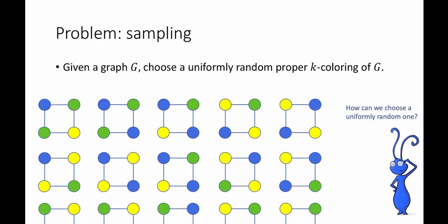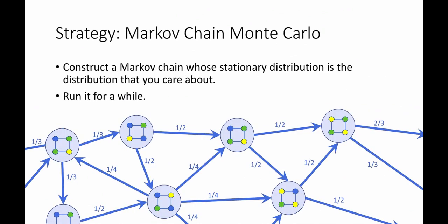Hopefully this example convinces you that the problem of sampling can sometimes be non-trivial. In this video, we're going to see a way to do this, or at least to approximately do this, called Markov chain Monte Carlo.